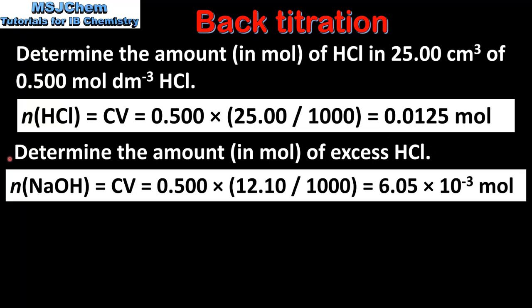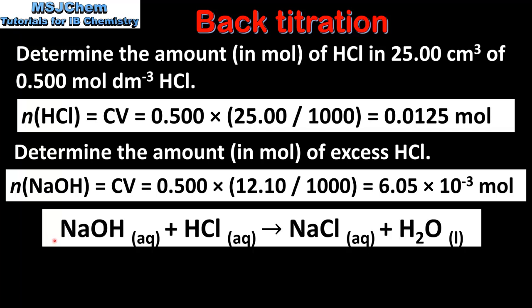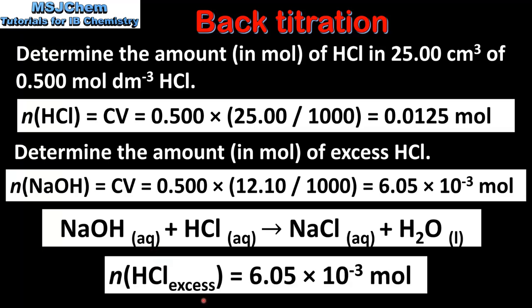Next we determine the amount in moles of excess hydrochloric acid by calculating the moles of sodium hydroxide that reacted with it: 0.5 × (12.10 ÷ 1000) = 6.05 × 10⁻³ mol. Since the molar ratio of NaOH to HCl is 1:1, the amount in moles of excess hydrochloric acid is also 6.05 × 10⁻³ mol.